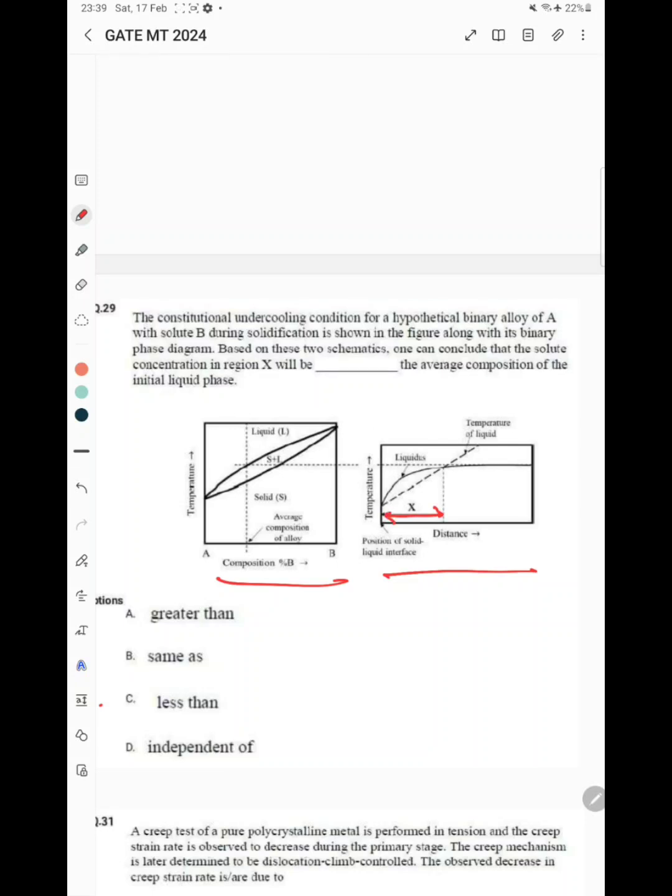Will it be less than, greater than, same, or independent of the average composition? If you compare, you can see the liquidus line is just above the temperature of the liquid. The correct answer will be less than the average composition of the liquid. We are talking about this region here.